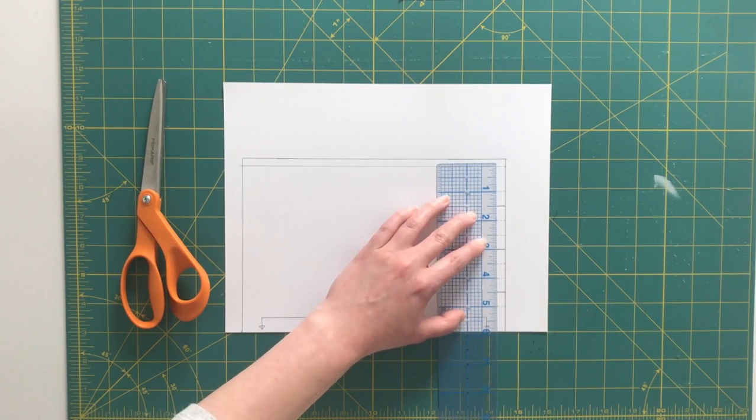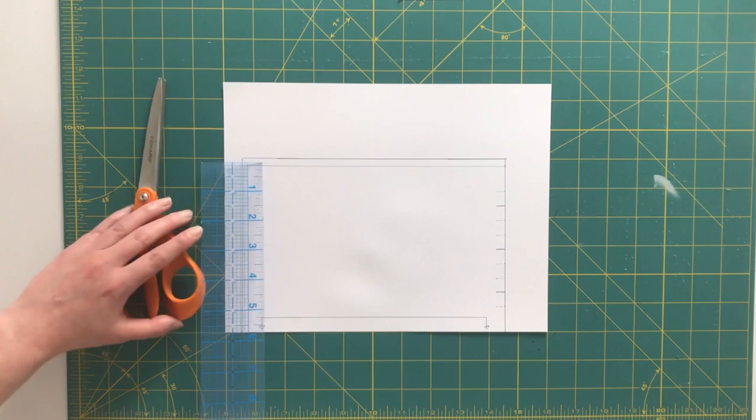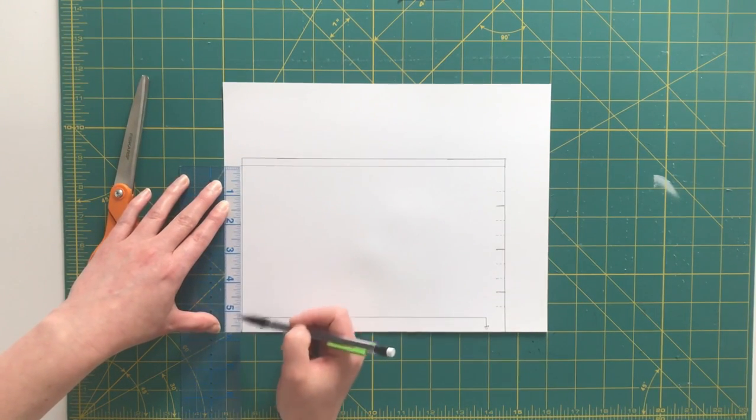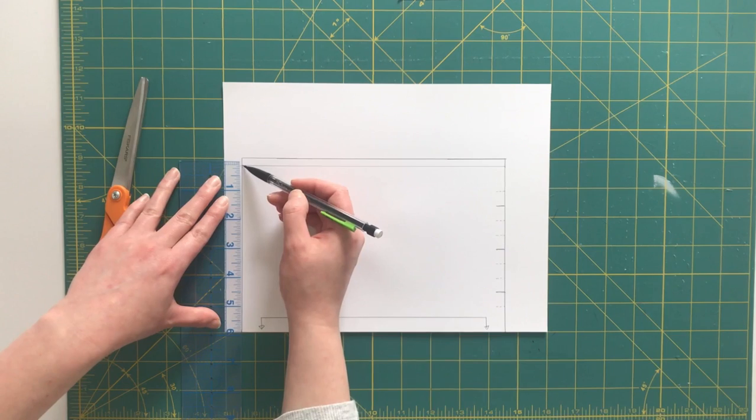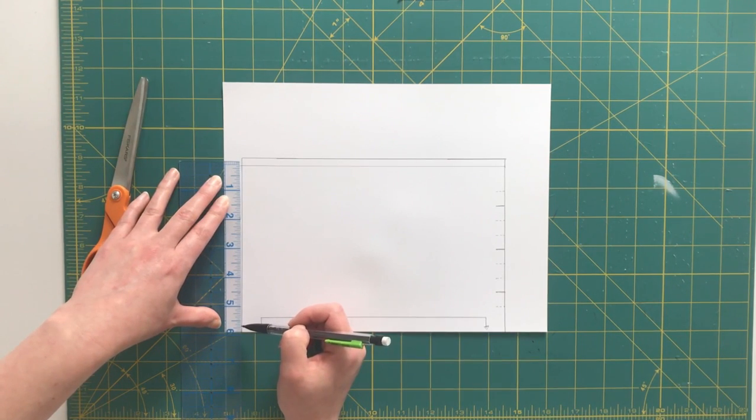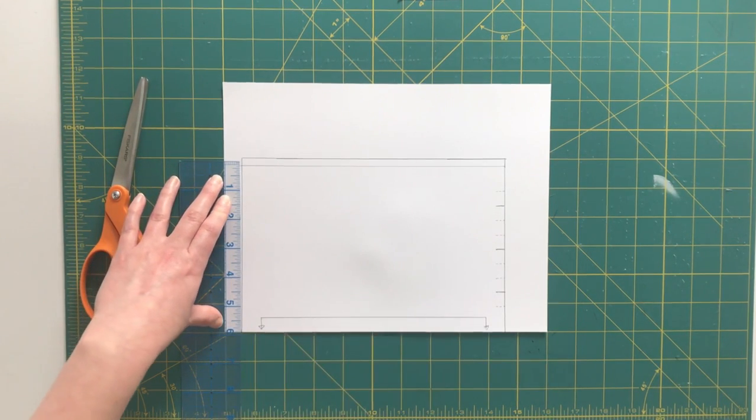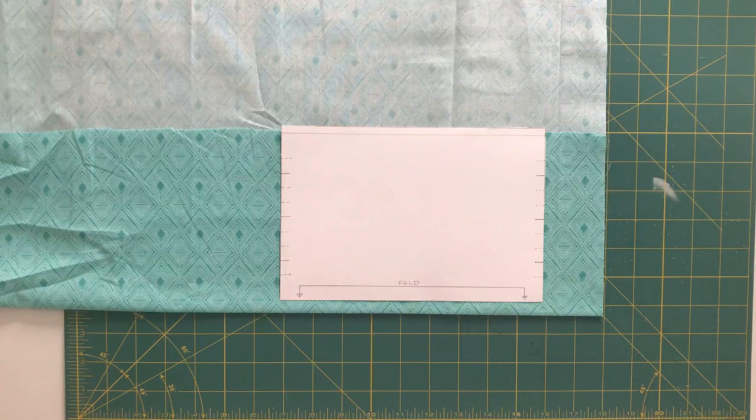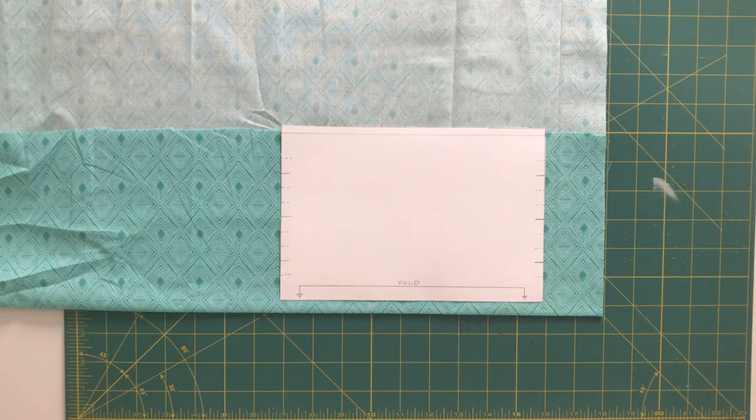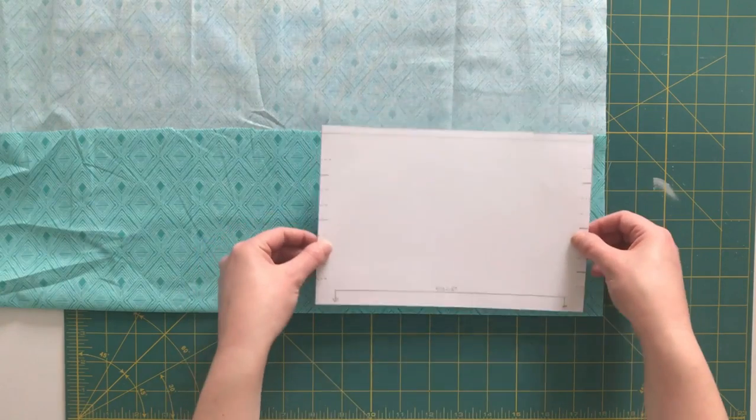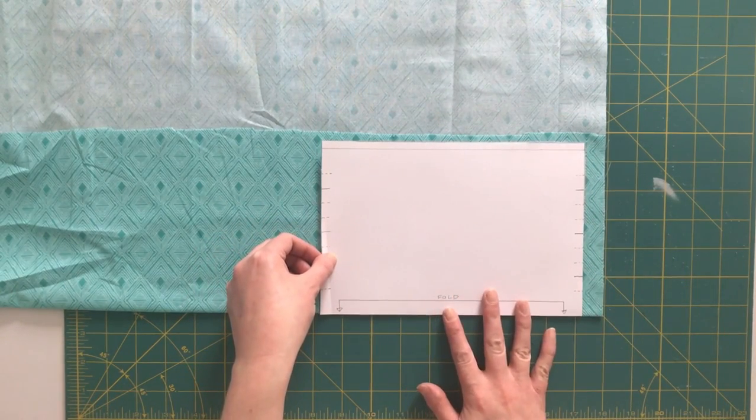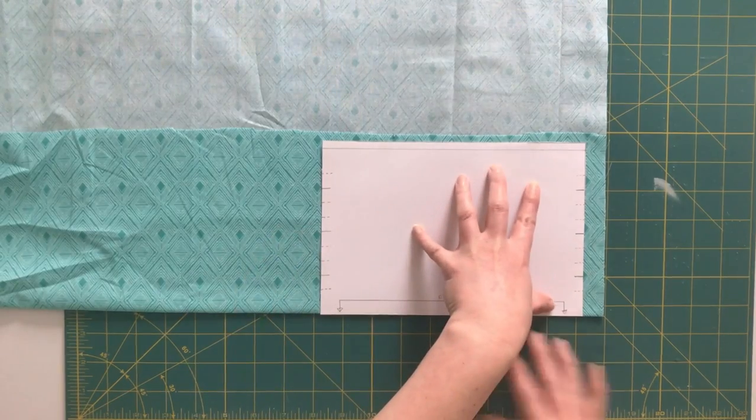Then I'm going to go ahead over to the opposite side of my mask and mark those same points along this edge working from this seam allowance edge down so that my pleats match on both sides. Okay, now that I have my finished pattern, it's time to cut out my fabric. So I'm going to place this pattern on the fold of my fabric and cut out one.